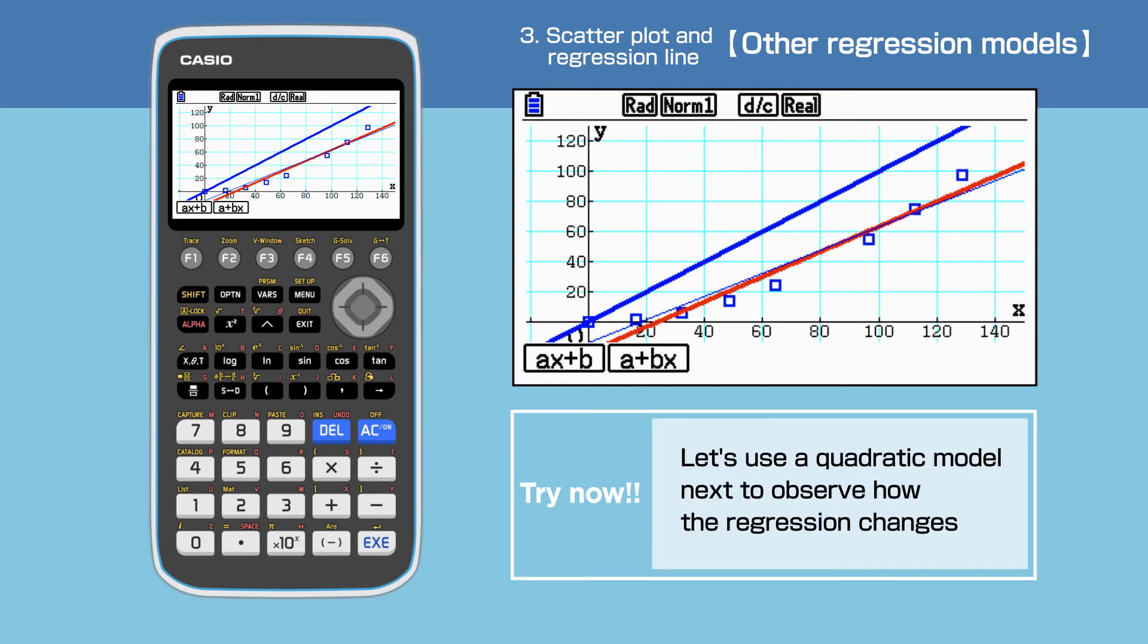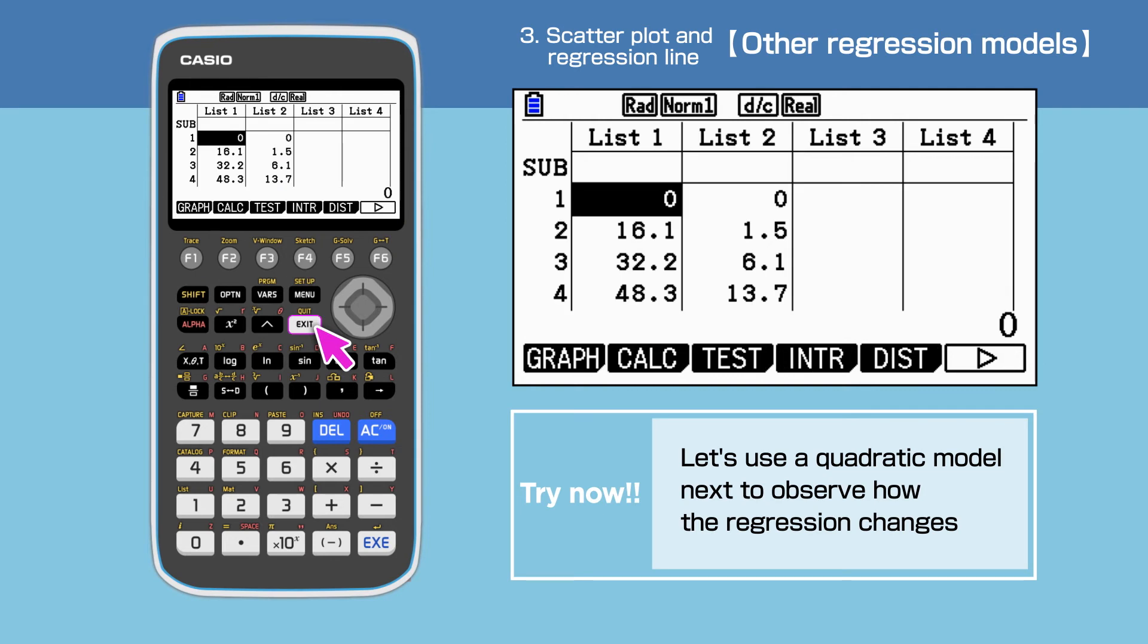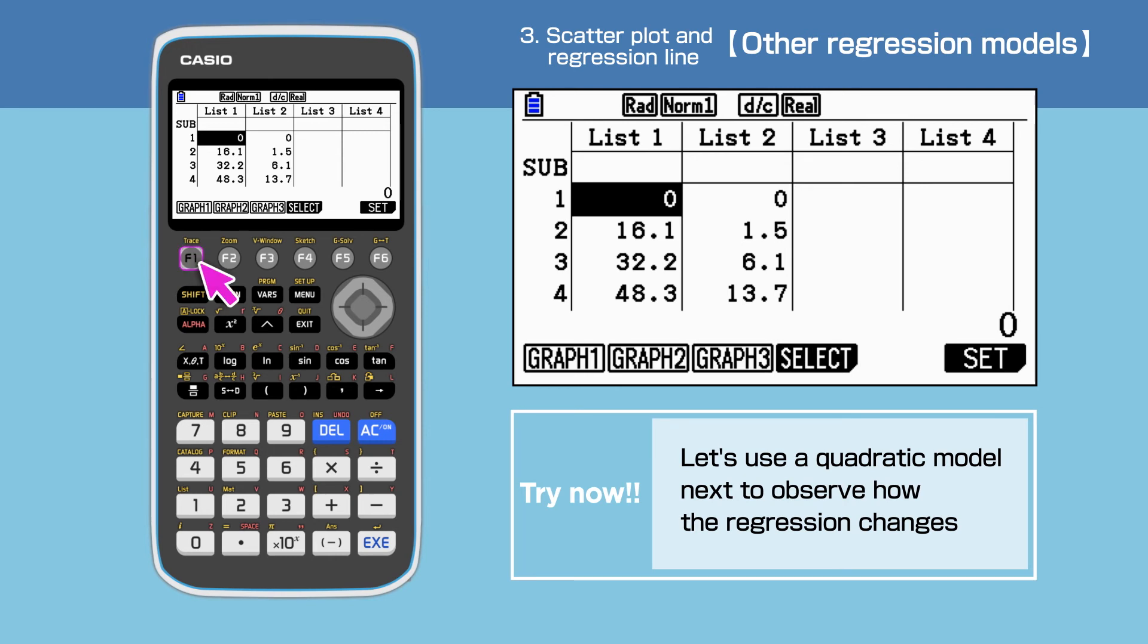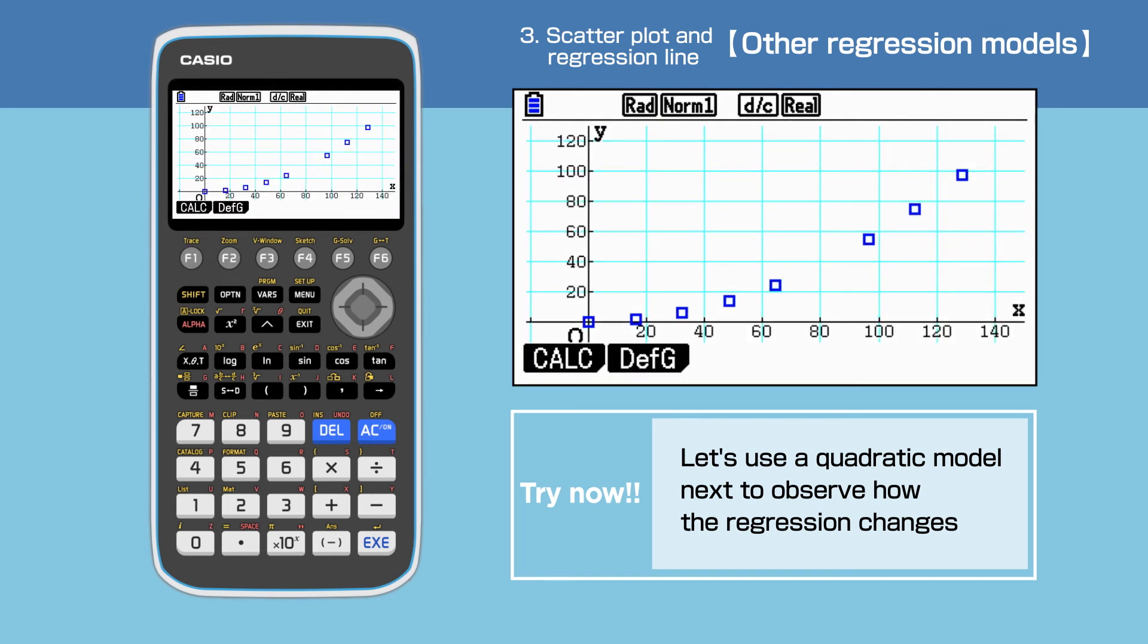In order to look for an even better regression, we are changing the regression model next. Press SHIFT, then EXIT to go back to the screen where we enter the data. Press F1, then F1 to draw the graph. Then press F1 again to display the regression command.